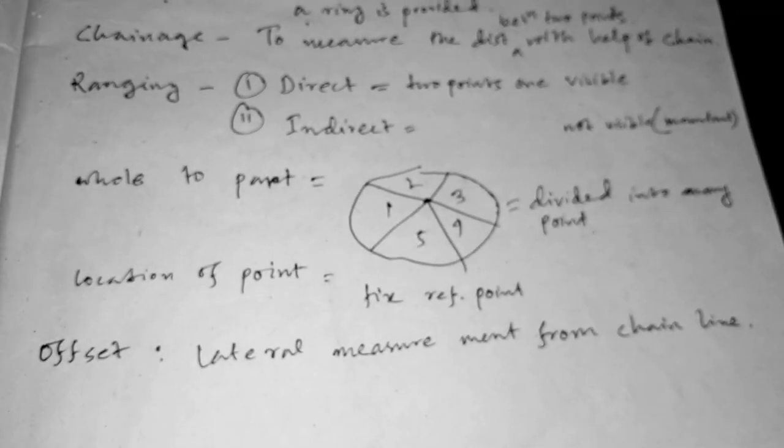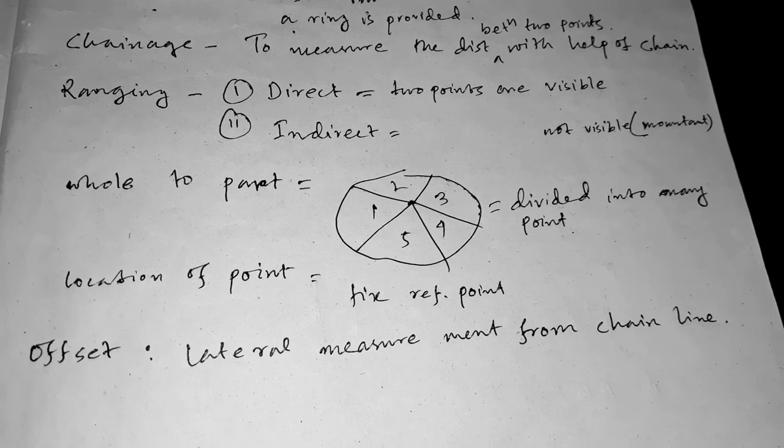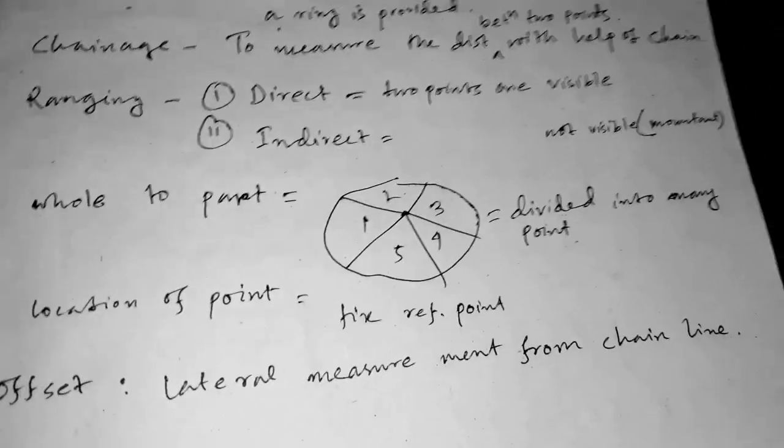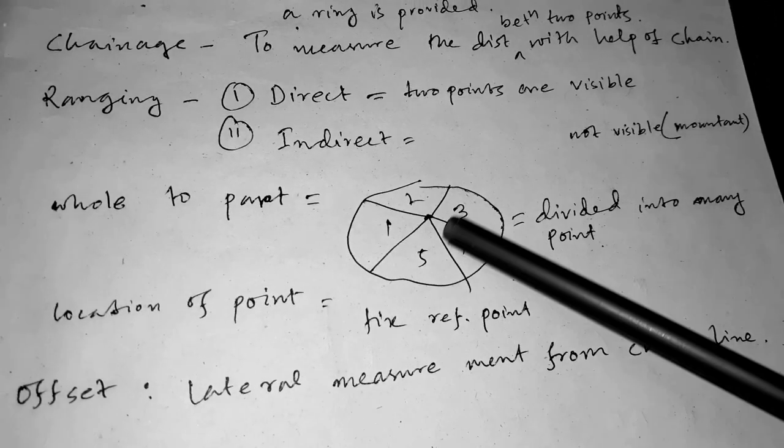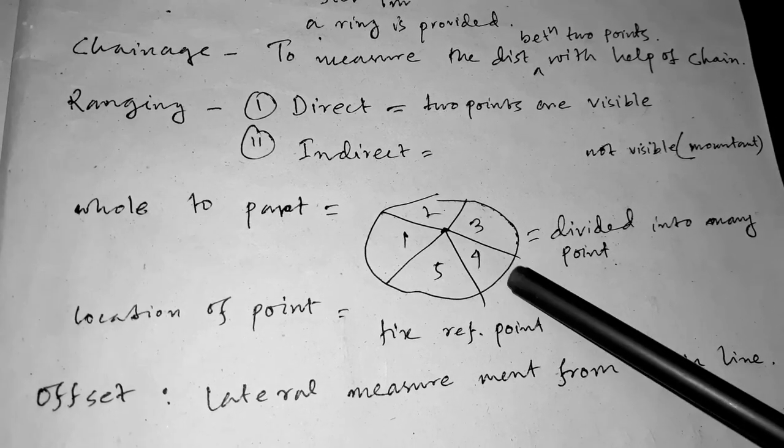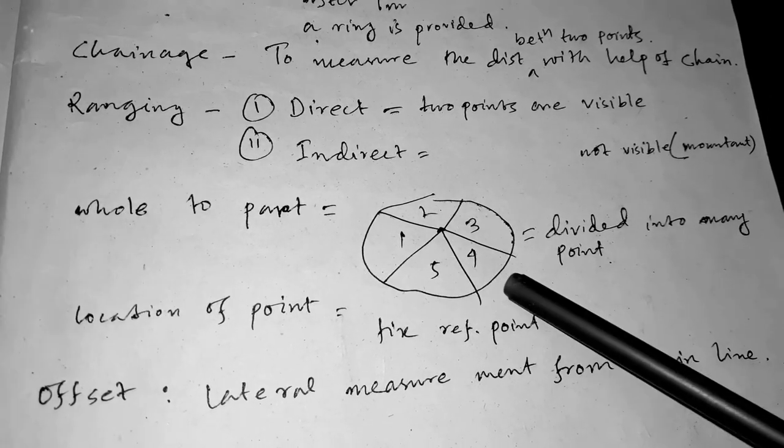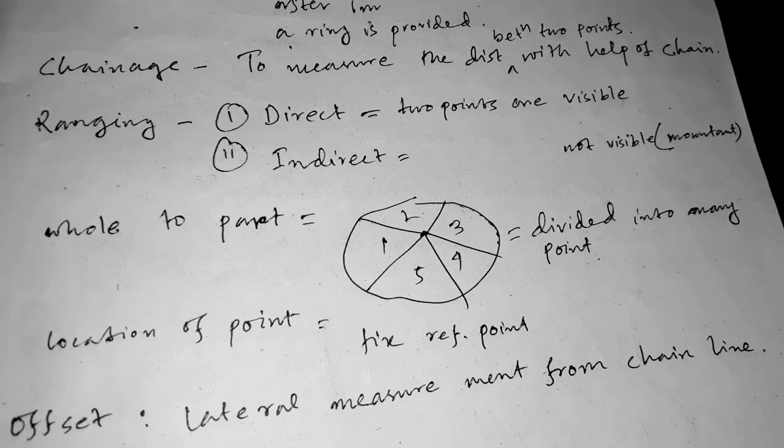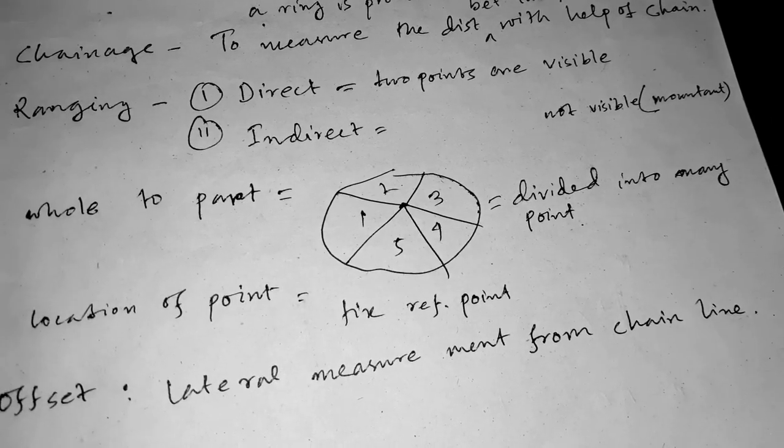In chain surveying, we use whole to part process. Whole to part means it is a circular shape and we divide it into lots of segments and divide it into many points.